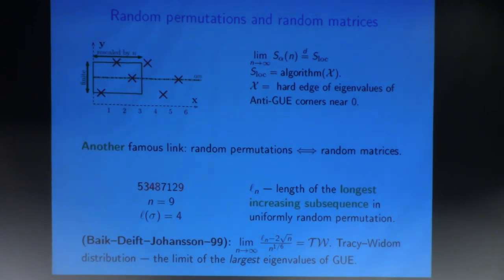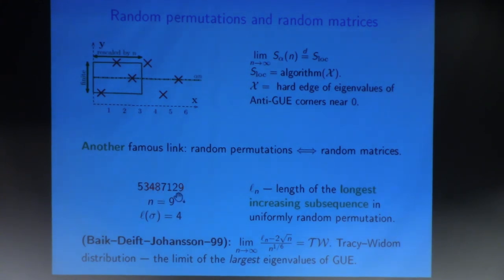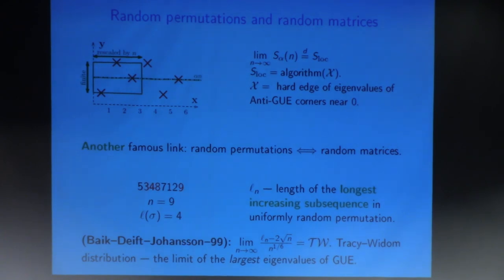To speak about the proofs, it helps to have an analogy with previous results linking random permutations to random matrix theory. The most famous is the Baik-Deift-Johansson theorem from 1999. Instead of sorting networks, they looked at the longest increasing subsequence of a permutation. For example, in a permutation of nine letters, the subsequence 3, 4, 8, 9 is an increasing subsequence. Among all increasing subsequences, you find the one with the longest length, and you study that length when the permutation is sampled uniformly at random.